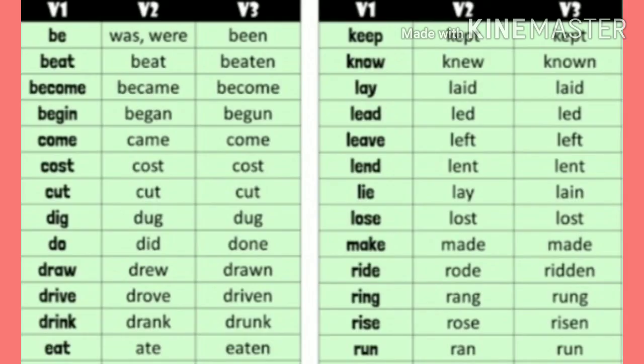Here are some examples of verb forms that you can go through, and you will find more in the book. Like 'beat' is the first form, 'beat' is the second form, and 'beaten' is the third form. 'Become,' 'became,' and 'become' are the three forms. So when we are writing perfect or perfect continuous tenses we only use the third form of the verb; otherwise we generally use the first form.